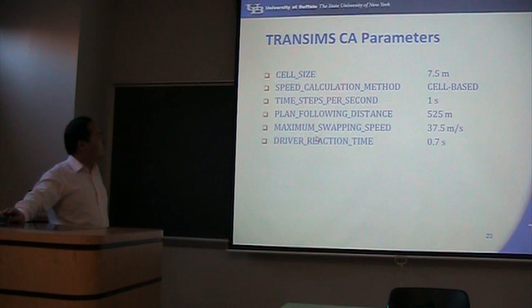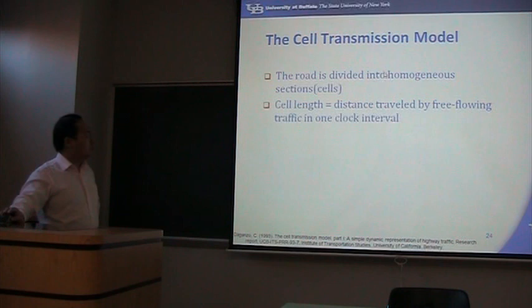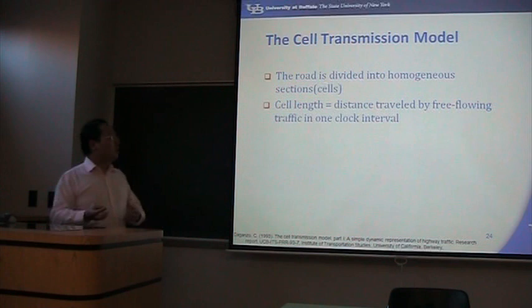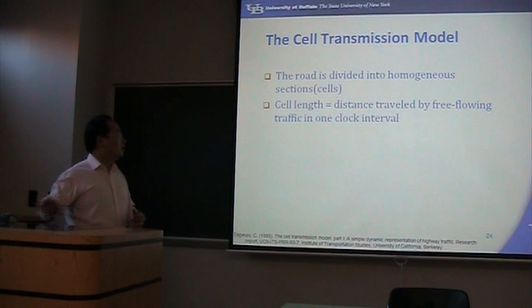Now I want to talk about another model called the Cell Transmission Model, which is very similar in idea to cellular automata, but they are different. In the Cell Transmission Model, the links are also divided into cells, so there are also many cells.